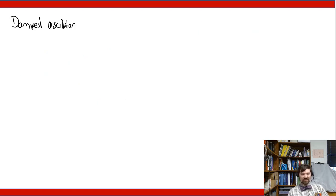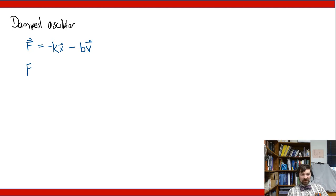Today we want to introduce the damped harmonic oscillator. In the damped harmonic oscillator, the force ends up looking not just like a restoring force negative kx, but there's usually a second term — a damping term — b times v, where v is velocity, or in other words the rate of change of x, and a is the rate of change of v. So again f equals ma, and when you combine these two equations together you get your basic damped harmonic oscillator: m times a plus b times v plus k times x is equal to zero.